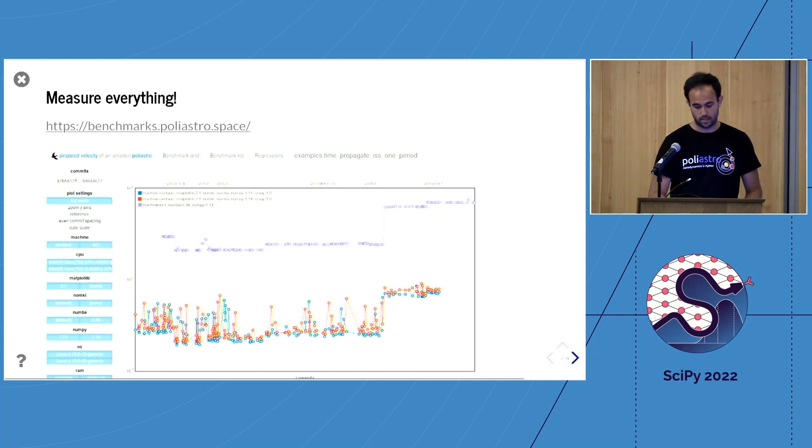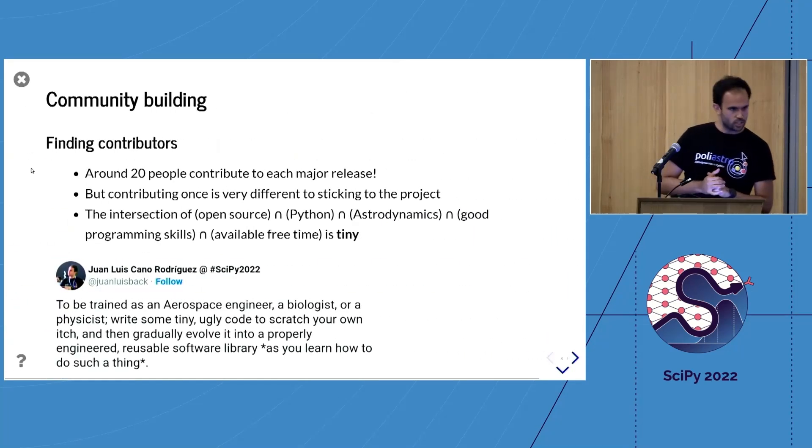Measure everything, please. No snapshots, but better than nothing is to have some continuous benchmarking. This is a tool called airspeed velocity, and I really recommend you check it out. Okay, so I have one minute, so I'm going to be as fast as possible talking about the last challenge, which is community building.